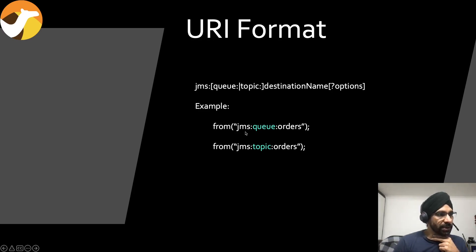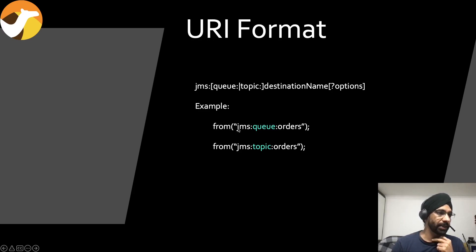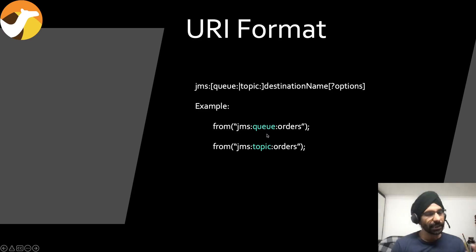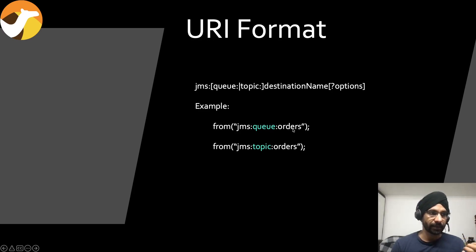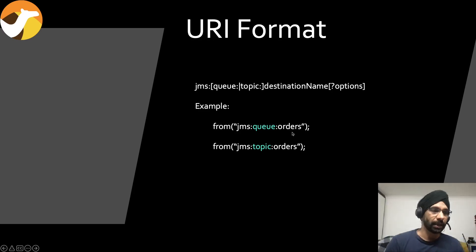Here's a quick example of how you form your URI when connecting to the JMS component. You prefix with 'jms:' then you give the queue name. It's optional but it's a good idea to give a hint whether it's a queue or topic, then give your queue or topic name. For example, to connect to a queue called 'orders' you'd write 'jms:queue:orders', and for a topic: 'jms:topic:orders'.